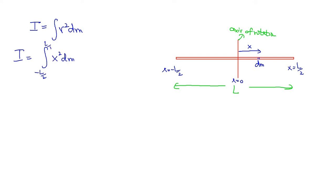Now we need to express dm. The linear density μ is the total mass divided by the length of the rod, so μ = M/L. The small mass element dm equals μ times the small length element dx — multiplying density by length gives mass.